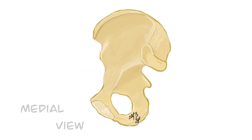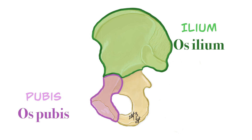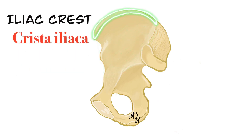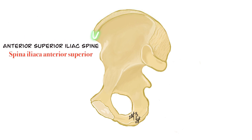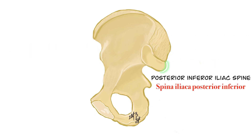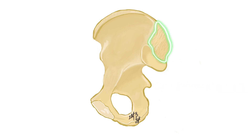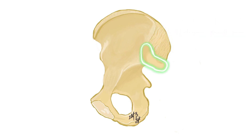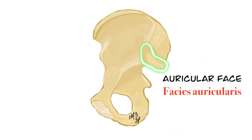Now let's learn the separate bones on the medial view of os coxa: os ilium, os pubis, and os ischii. The internal surface of the ilium is a smooth and concave surface called the iliac fossa, or fossa iliaca in Latin. On the medial view we can also see the crista iliaca, the spina iliaca anterior superior, spina iliaca anterior inferior, spina iliaca posterior superior, and spina iliaca posterior inferior. Posterior to the iliac fossa, there is a rough area inferior to the crest known as the iliac tuberosity, or tuberositas iliaca in Latin. Inferior to the tuberositas iliaca, there is an ear-shaped surface known as the auricular surface, or facies auricularis in Latin. Facies means surface and auricula means ear. This part articulates with the auricular surface of the sacrum and forms the sacroiliac joint.